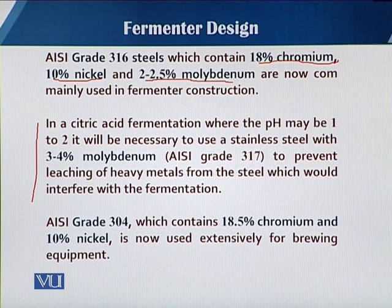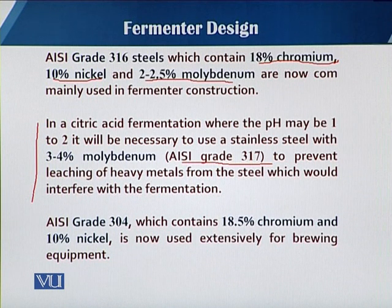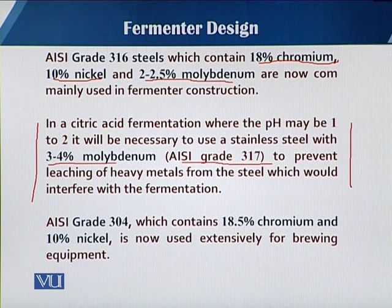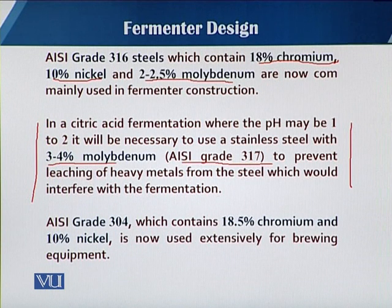In that case, there is a grade called 317, which is produced by the excess addition of molybdenum — 3 to 4 percent molybdenum — that increases the quality beyond 316 and is graded as 317. So 317 grade fermenter material is mostly used for fermenters that will be used for acidic fermentations.